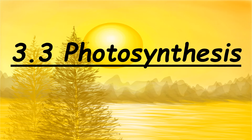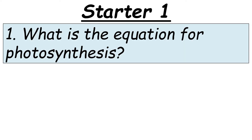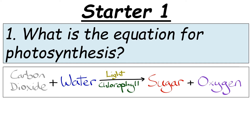This is National 5 Biology 3.3 Photosynthesis. Start off with the equation — press pause and see if you can do this. Carbon dioxide is taken out of the air, water is taken up from the roots, and it gets converted into sugar and oxygen. So oxygen is a waste product for plants.